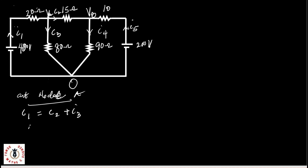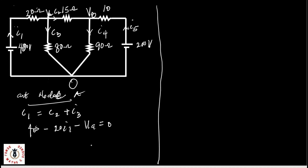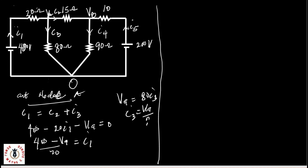Now for I1, I have 400 volts minus 20·I1 minus VA equals 0. In my earlier lessons I have explained why I use minus VA — I'm going from a higher potential at this point to a lower potential, the reference node, 0. So that (400 minus VA) over 20 equals I1. Now in the same light, if you look at I3 — I3 is between VA and 80 ohms — so that VA equals 80·I3, and invariably I3 equals VA over 80.